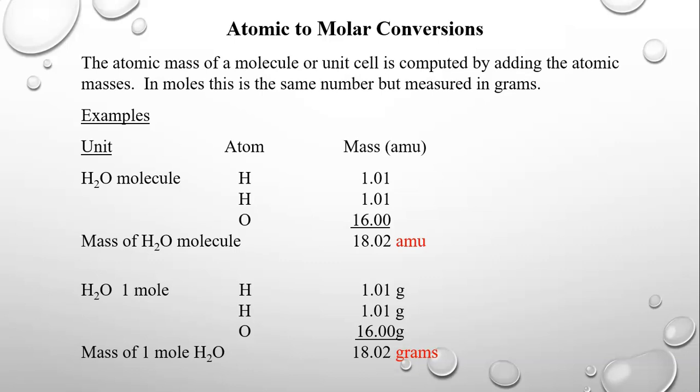The atomic mass of a molecule is computed by adding the atomic masses. In moles, this is the same number but measured in grams. For water, you have two hydrogens — 1.01 and 1.01 from the periodic table — and oxygen at 16, giving a total of 18.02 atomic mass units as the mass of a water molecule. In terms of a mole, it's 18.02 grams. So 6.022 times 10 to the 23rd water molecules gives us 18.02 grams, something we can actually measure on a scale.